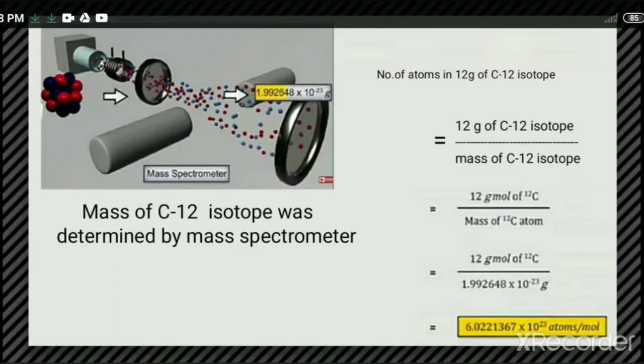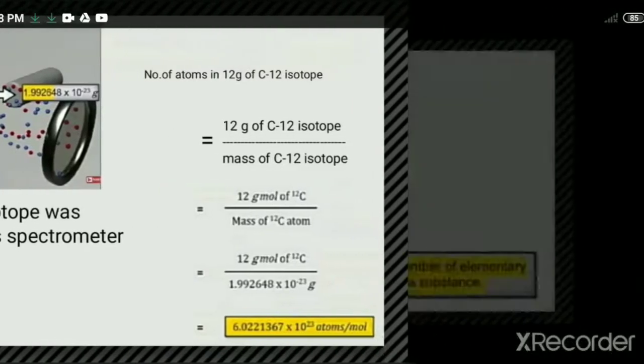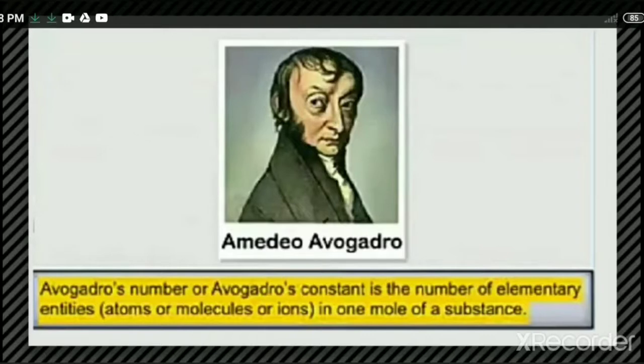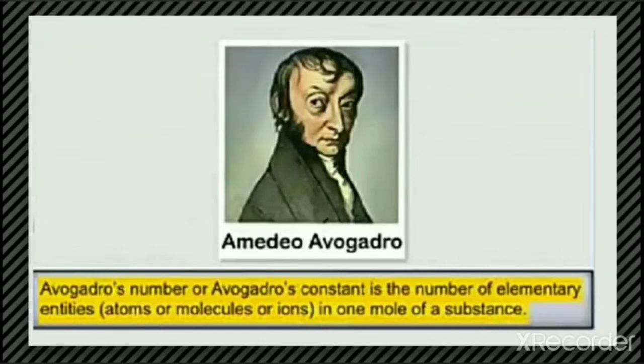In short, we can write 6.022 × 10²³. This number is called Avogadro's number. Avogadro's number, or Avogadro's constant, is the number of elementary entities — which can be atoms, molecules, or ions — in one mole of a substance. So one mole of a substance contains 6.022 × 10²³ number of particles.